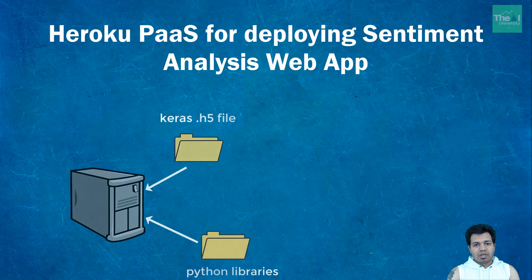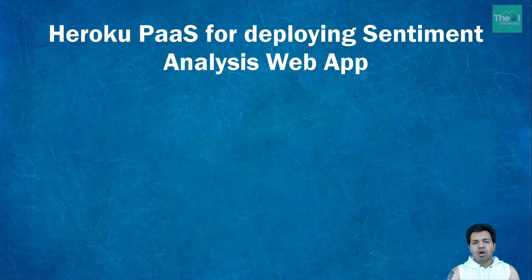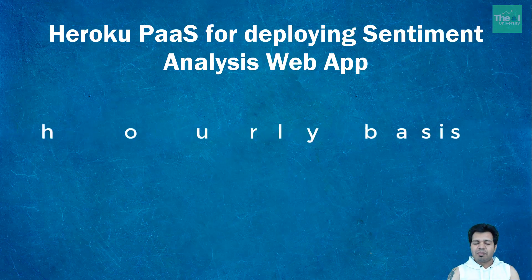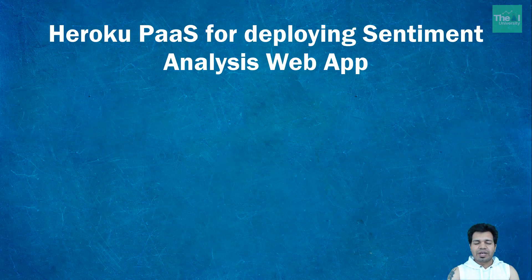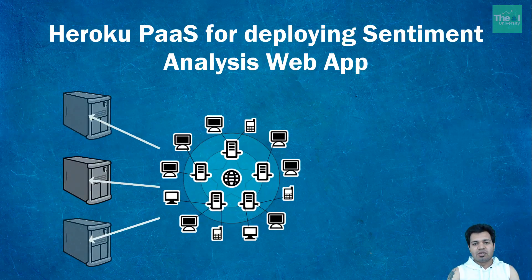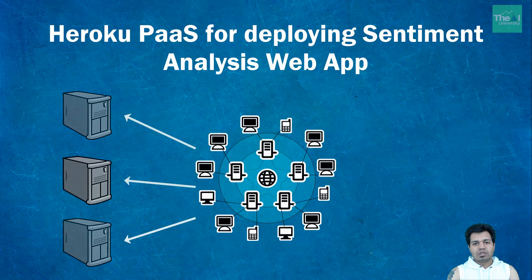We can either use a server available on-premise in the company, or we can utilize cloud infrastructure to host our application. We can use IaaS — Infrastructure as a Service — from AWS, Microsoft Azure, or Google Cloud. These cloud providers charge for infrastructure by the hour, which is pretty cheap compared to on-premise server setup. Heroku, as a platform as a service, lets us focus on writing the application while it takes care of spinning up and scaling the server.